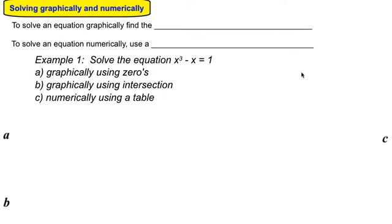To solve an equation graphically, we need to find the x-intercepts, or what's called the zeros sometimes. And to solve an equation numerically, usually we use a table of values to do that. So for our first example, we have the equation x cubed minus x is equal to 1. And we're going to solve it graphically using zeros, graphically using an intersection of two equations, and numerically using a table.